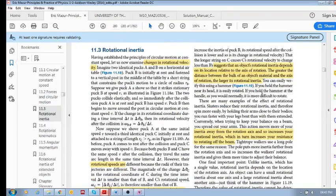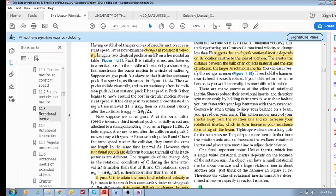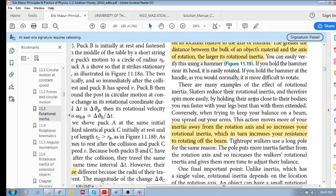So what are some examples? Well, we just saw an example with the hammer. But skaters. Skaters reduce their rotational inertia, their resistance to change their rotation. By what? By holding their arms close to their bodies.